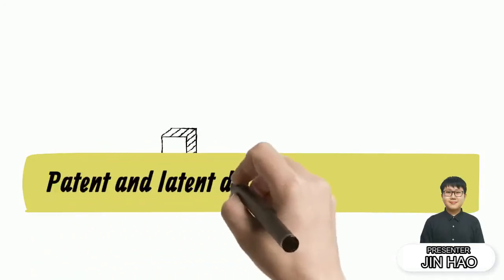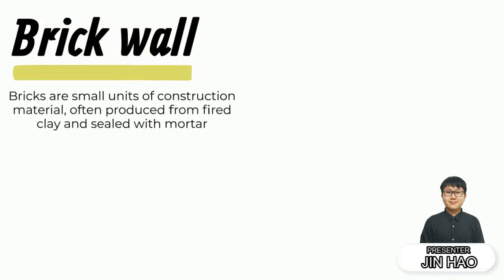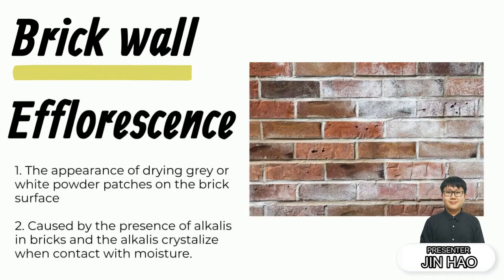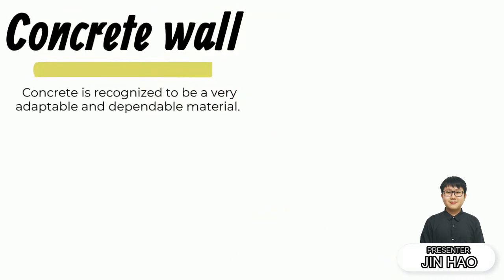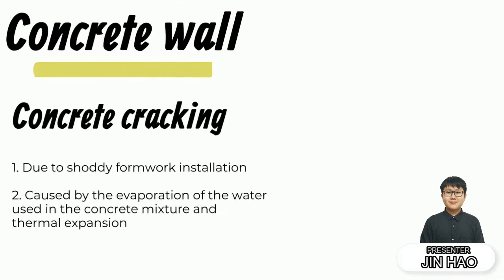Pattern and latent defects of internal work. First is brickwork. Bricks are small units of construction material produced from fired clay and sealed with mortar. One of the defects is efflorescence, which is the appearance of dry grey and/or white powder on the brick surface, caused by the presence of alkaline in bricks. Next is concrete wall. Concrete is recognized to be a very adaptable and dependable material. The defect is concrete cracking due to improper formwork installation, evaporation of water used in the concrete mixture, and thermal expansion.